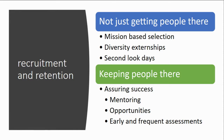The first component is recruitment and retention. It's not just about getting people there. For residency, the things that make a difference are mission-based selection — making sure you're using holistic review and inviting appropriate folks — and second are diversity externships and second-look visits. The other component is keeping people there: assuring success once they are in your program through mentoring, opportunities, and early and frequent assessments to keep people on track.